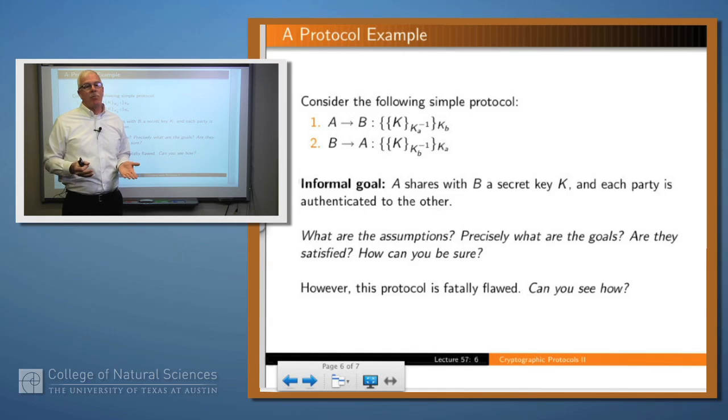Okay, so here's an example of a very simple protocol. So A sends to B a certain message. Imagine that A and B are trying to establish a shared key between them. So A creates a new key K session key, signs the key so you know it's from A, encrypts it with B's public key so it's sent confidentially, sends that message off to B.